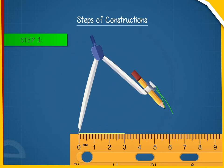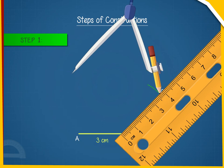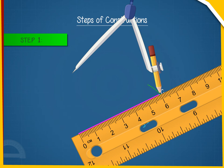Draw triangle ABC using the measurements AB equals to 3 cm, BC equals to 3.5 cm and AC equals to 6 cm.